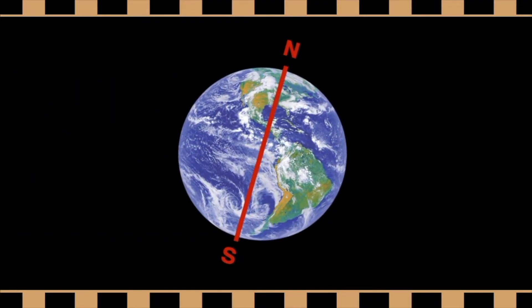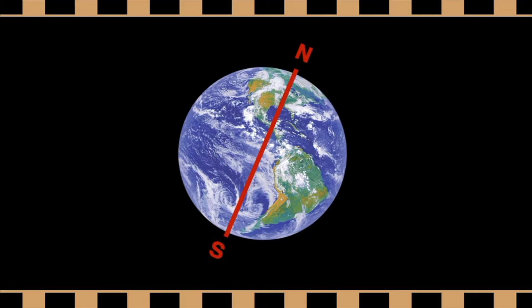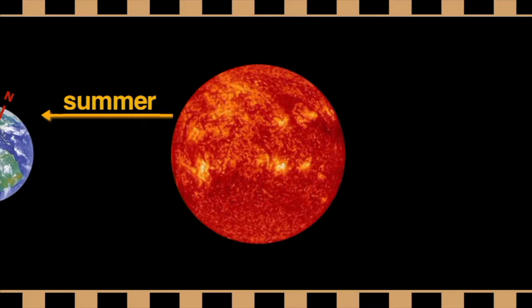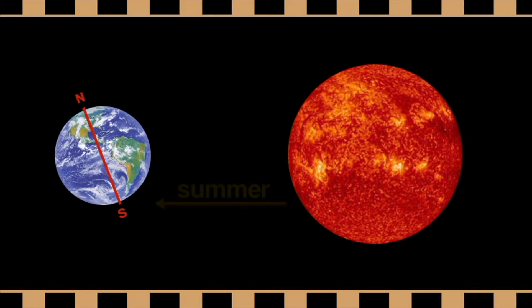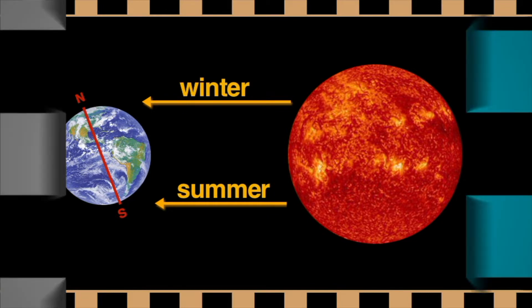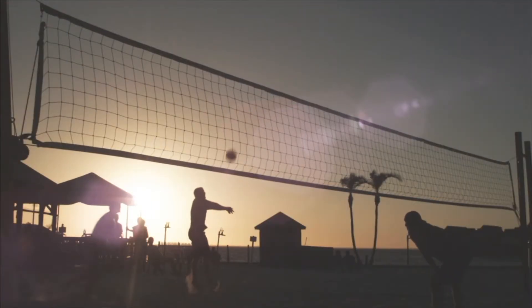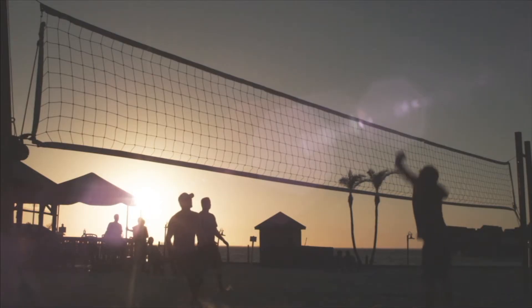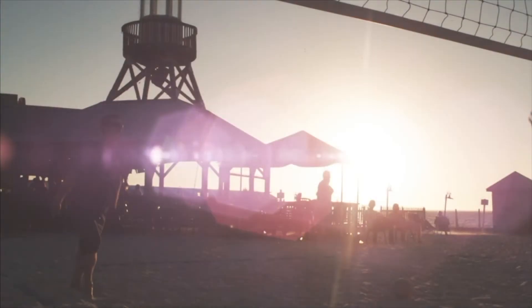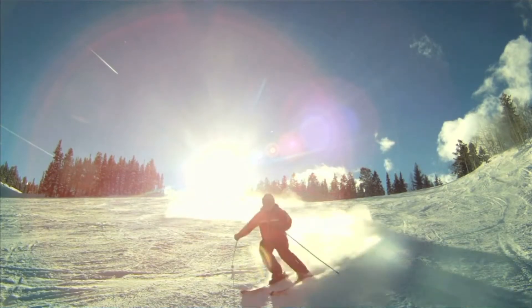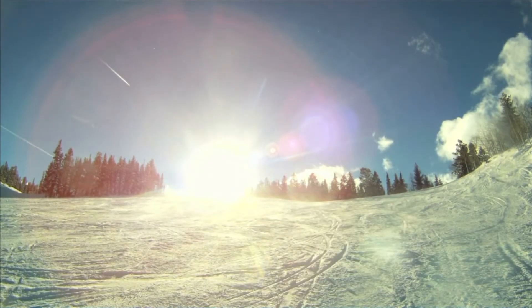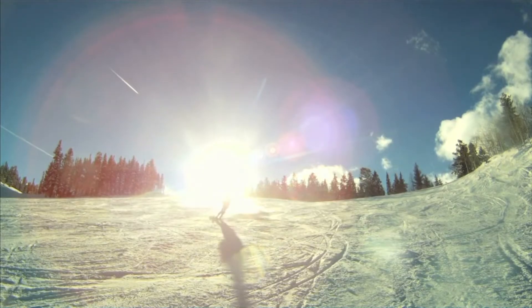The earth is tilted about 23.5 degrees, and it is this tilt that causes the seasons. When the north pole is tilted toward the sun, it's summer in the northern hemisphere. It takes in more sunlight — with more light, the days are longer and the weather is warmer. At the same time, the south pole is tilted away from the sun. The southern hemisphere receives less sun; with less sun, the days become shorter and weather is colder. It's winter.